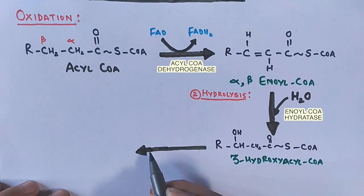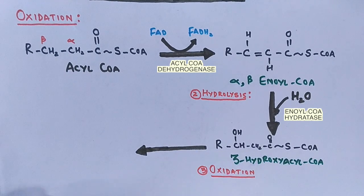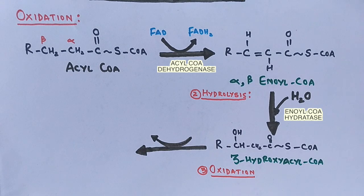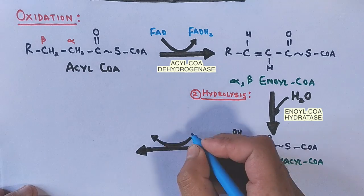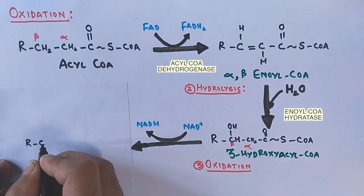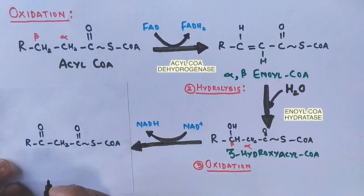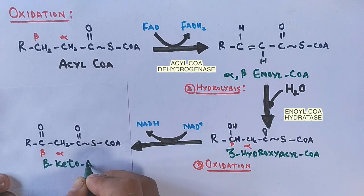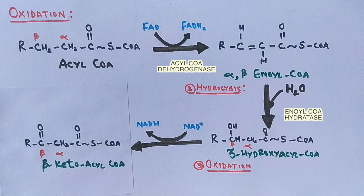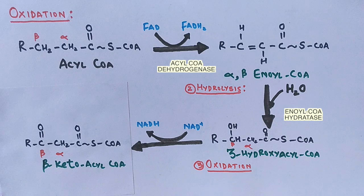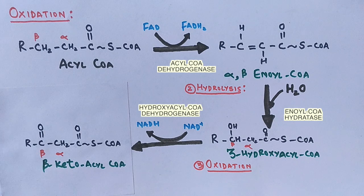The third step of beta-oxidation is again oxidation, this time on the 3-hydroxyacyl-CoA molecule. The oxidizing agent this time is NAD+ rather than FAD, which we saw in the first oxidation reaction. NAD+ receives a hydride from the hydroxyl group present on the beta carbon, thereby giving us a ketone molecule called beta-ketoacyl-CoA. Now the beta carbon is devoid of any hydrogen atoms and is oxidized. This oxidation reaction is catalyzed by the enzyme hydroxyacyl-CoA dehydrogenase.